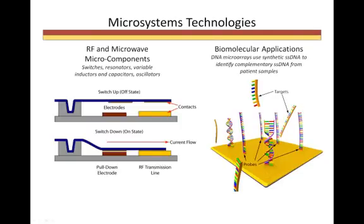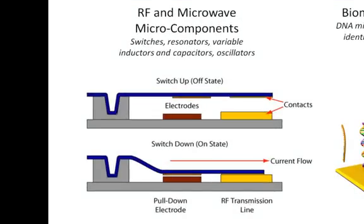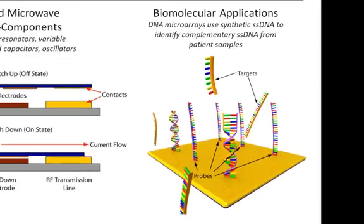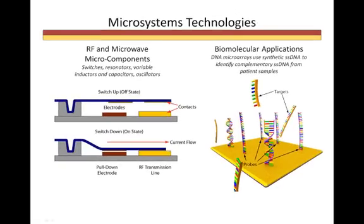For radio frequency, or RF, microwave, and various communication systems, microsystems technology has miniaturized the common switch, creating microsized switches that operate at frequencies of 0.1 to 100 gigahertz with switching speeds less than 100 microseconds. In the biomedical field, we now have DNA microarrays that are used to identify the presence of specific genes as well as the gene expression of a group of cells — which genes are active and inactive in a patient. These arrays are also being used to study how a person's genes react to specific treatments, medicines, and varying doses.